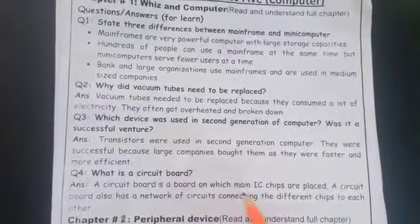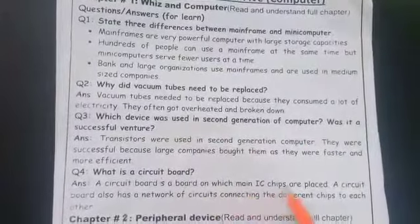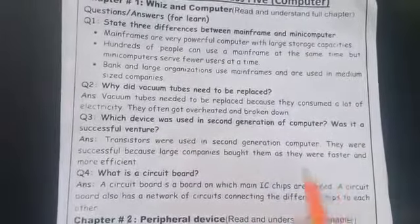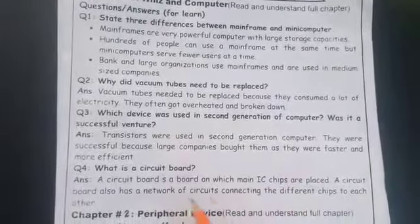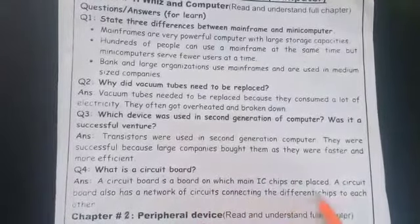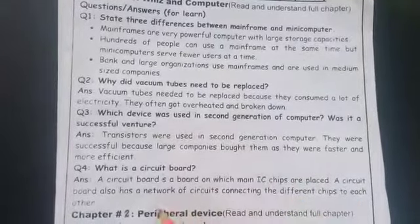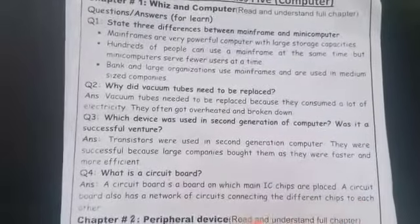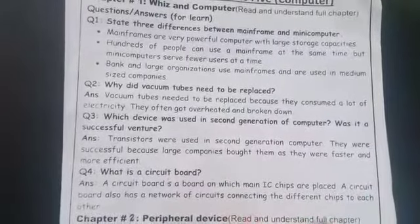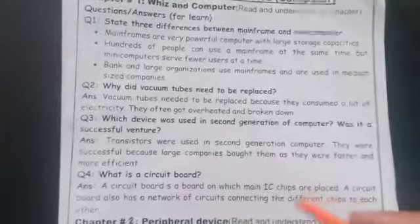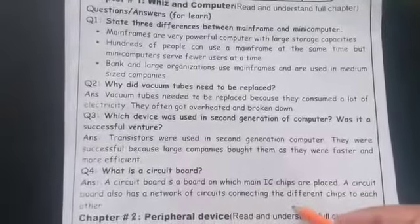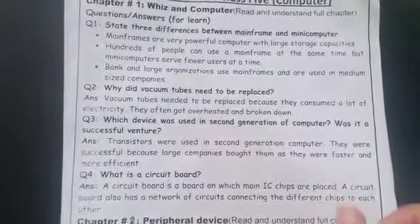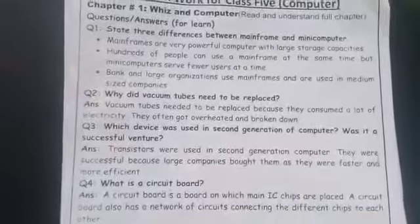What is a circuit board? A circuit board is a board on which IC chips are placed. It also has a network of circuits connecting the different chips to each other. Students, this is the end of chapter number 1. Follow all the lectures and read carefully so that you can understand everything. Allah Hafiz, be blessed.